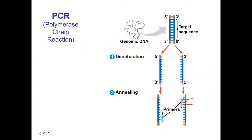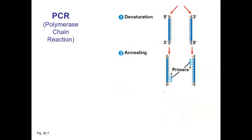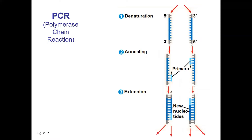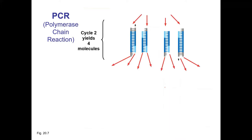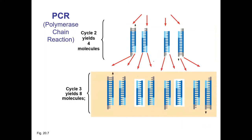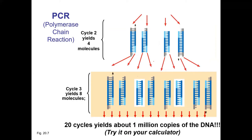The primers provide a 3' OH, which is the substrate for our DNA polymerase. The DNA polymerase and nucleotides are added and make complementary strands, so we go from one strand to two. Then we repeat this again and again: one cycle gives two strands, two cycles gives four, three gives eight, four gives sixteen.